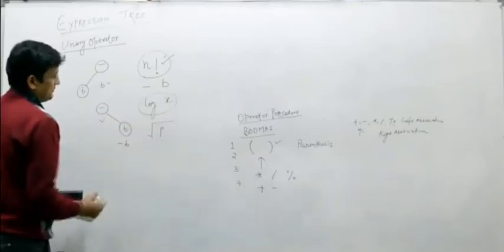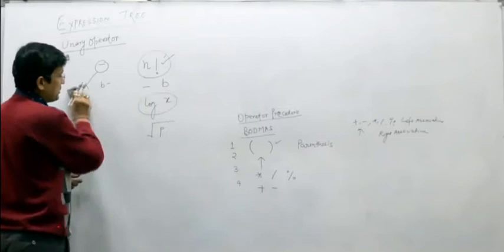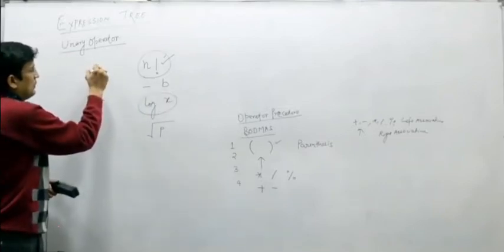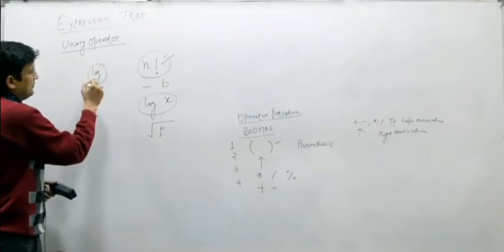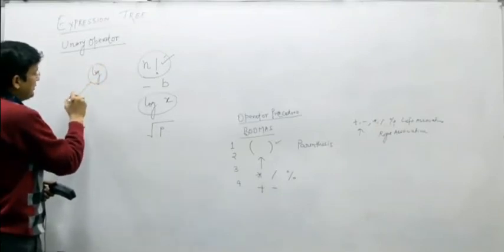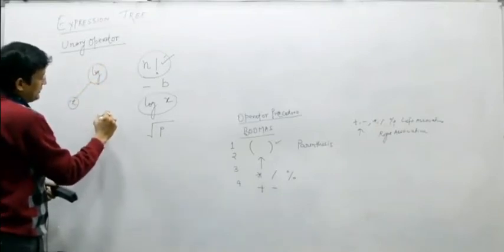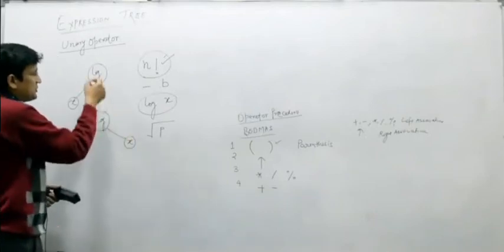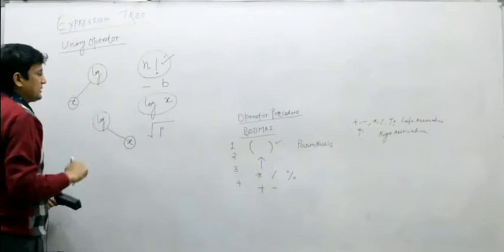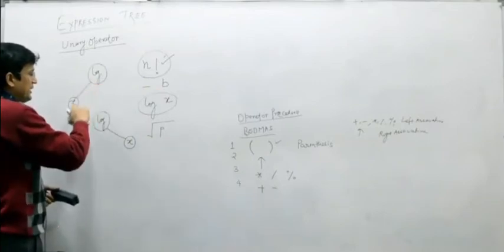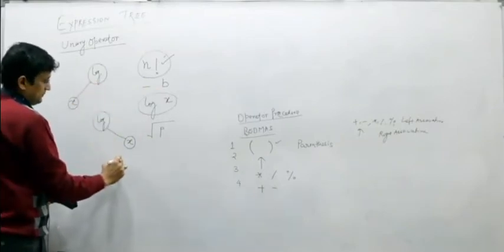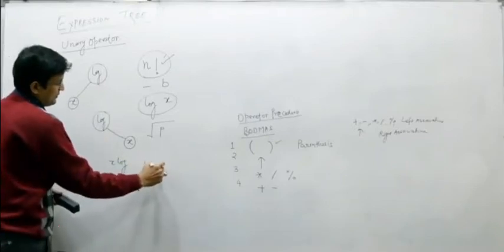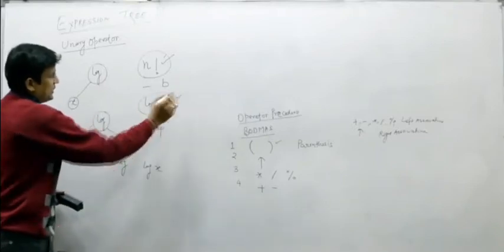Similarly, for log X, two types of trees are possible: X on the left or X on the right, with log as the internal node. Checking in-order traversals, one gives X log and the other gives log X. Since log X matches the expression, that tree is the correct one.